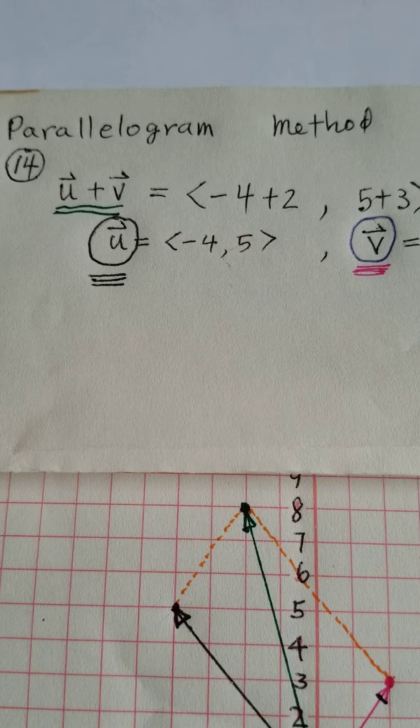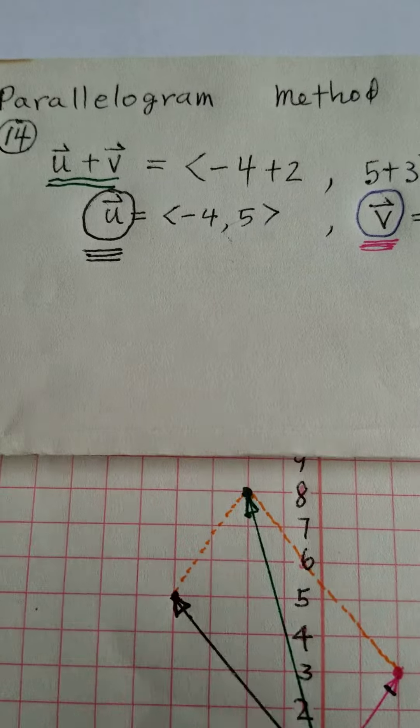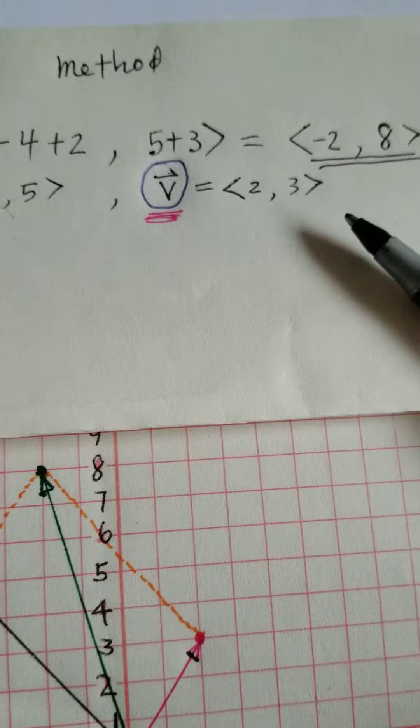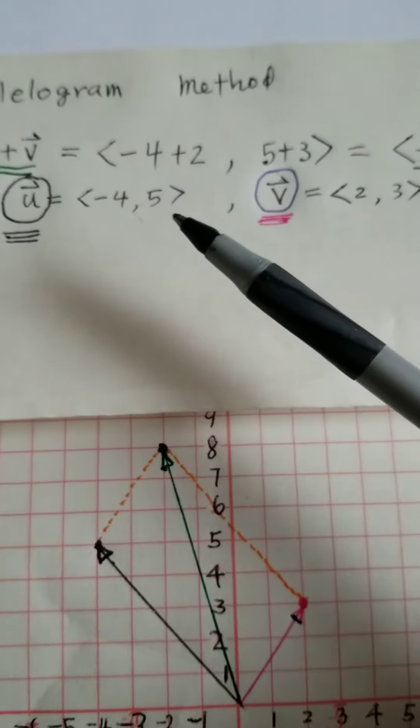We're using the parallelogram method to add vectors. You can see we have u and v and we want to add them. We usually do it by hand first.